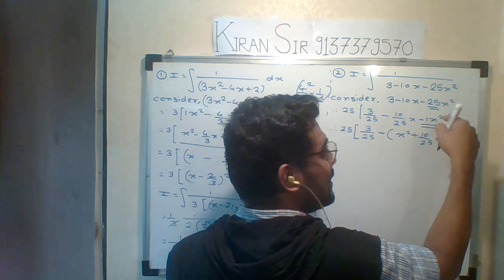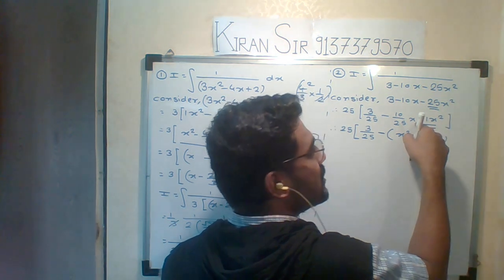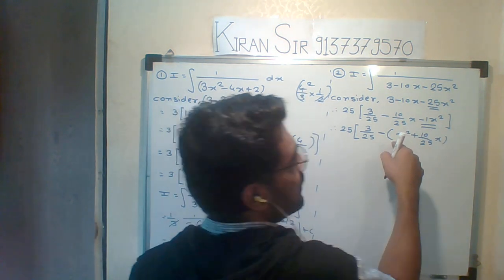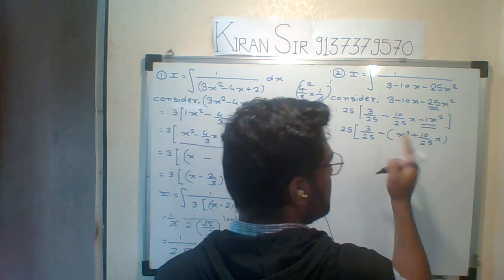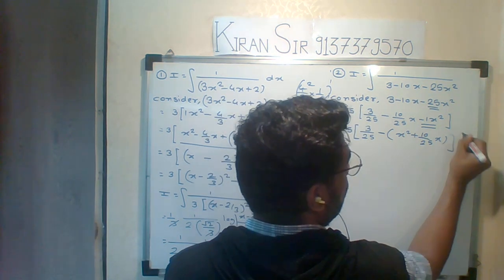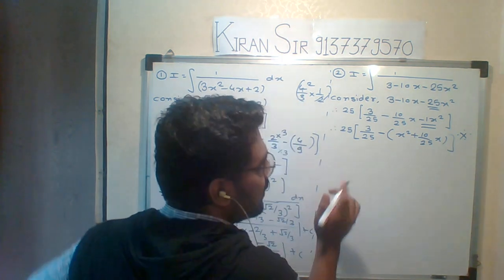But the main condition is what? The coefficient of x squared is minus 1. So make it positive. Because I need positive. That is your main important step for negative. This is why it is important.